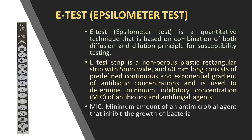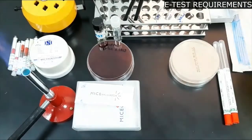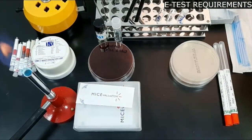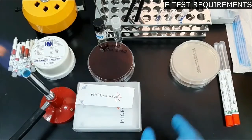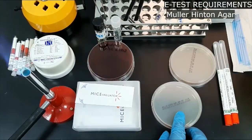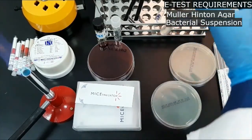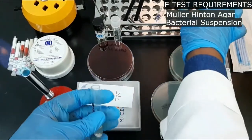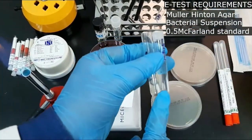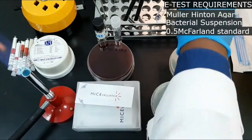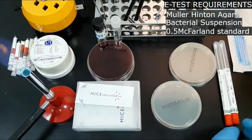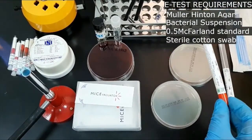Let's see what are the requirements needed for the E-test. First, you need Mueller Hinton agar with or without blood, then the bacterial suspension which should be compared with 0.5 McFarland standard, next a sterile cotton swab, and a MIC evaluator strip.